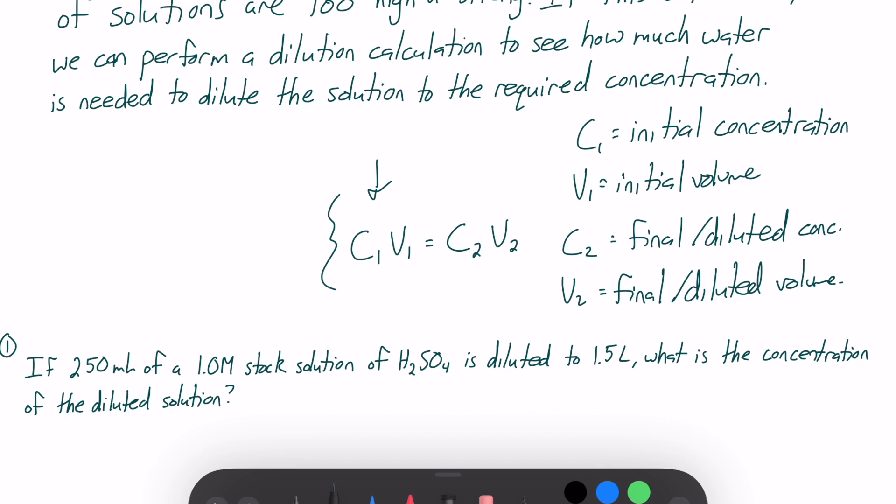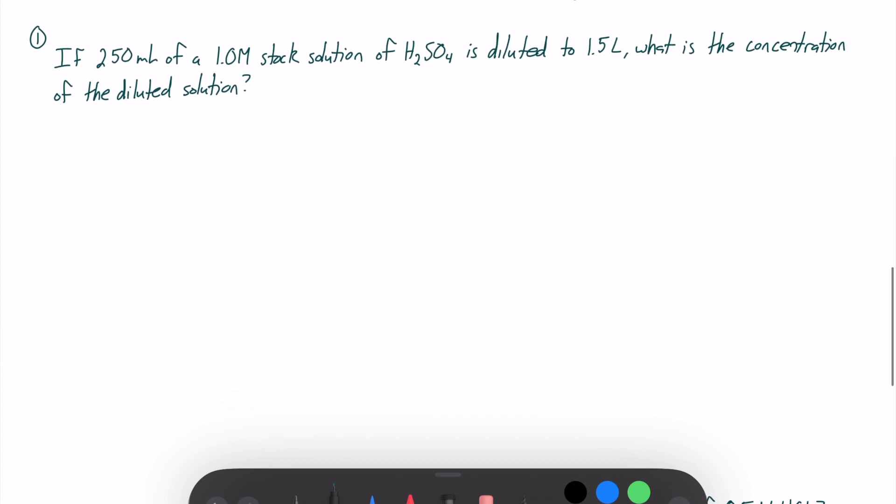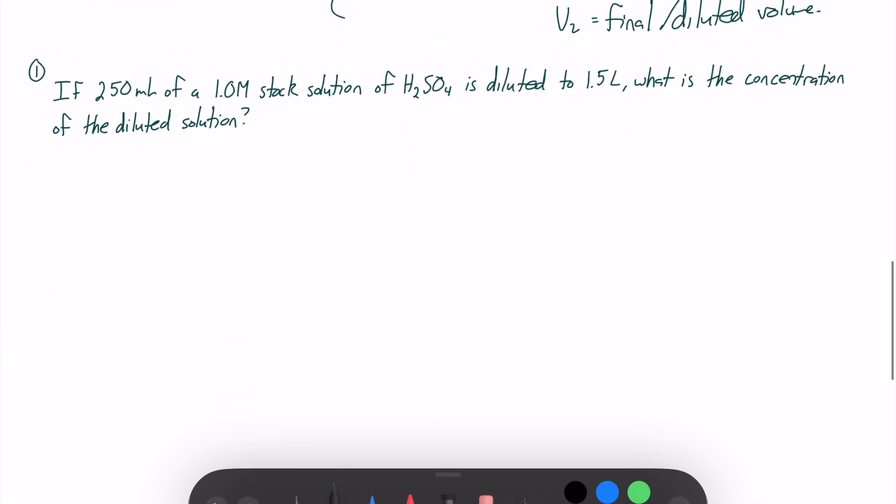So C1V1 equals C2V2. We are going to apply this equation to a couple of examples here. Number one: If 250 milliliters of a 1.0M stock solution of H2SO4 is diluted to 1.5 liters, what is the concentration of the diluted solution?